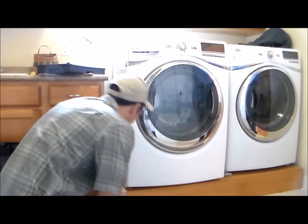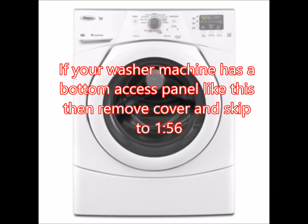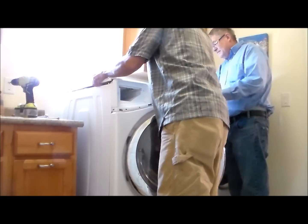This particular model is a model that does not have a bottom access panel. If you have a wash machine that looks like this, then just remove that bottom cover, it's very simple, and skip to a minute and 56 of this video.